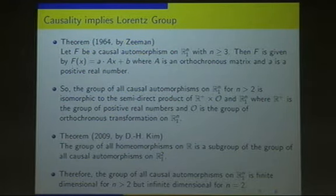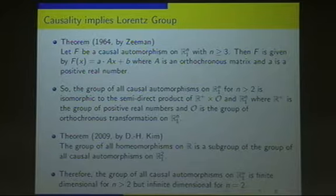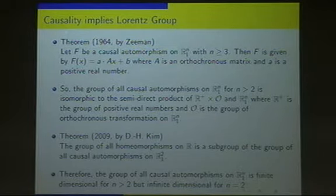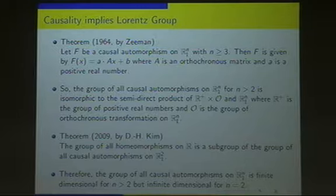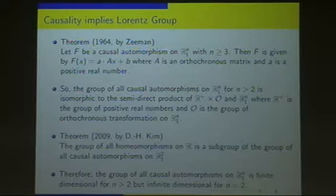The long-lasting open problem which I have mentioned is very simple — I think even middle school students will understand the problem. In 1964, a French mathematician Zeeman published a very famous paper titled "Causality implies the Lorentz group." He proved that if F is a causal automorphism — automorphism meaning a causal isomorphism where the domain and codomain are the same — on Minkowski space with dimension bigger than or equal to three, then F is given by this form.